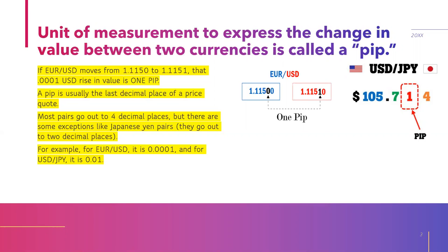As you can see right here, if EUR/USD goes up, this pip right here will go up — that will be one pip. A pip is usually the last decimal place of a price quote. Most pairs go to four decimal places, but there are some exceptions, like the Japanese Yen pairs, which go to two decimal places, as you can see right here.